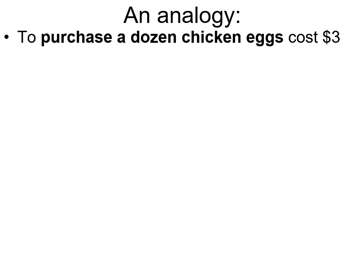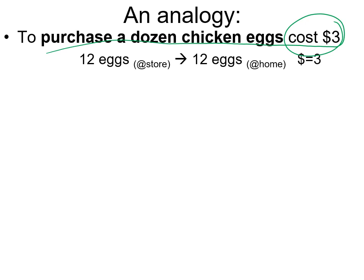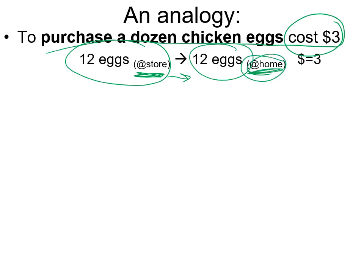To make sure we fully understand this, here's an analogy. Imagine you're going to purchase a dozen chicken eggs and they cost three dollars. We could write this up like a thermochemical equation: 12 eggs in a state 'at the store' change to a state 'at your home,' and the cost to do that particular change of state is three dollars — very similar to a thermochemical equation where a substance changes in some way and there's an energetic cost involved.